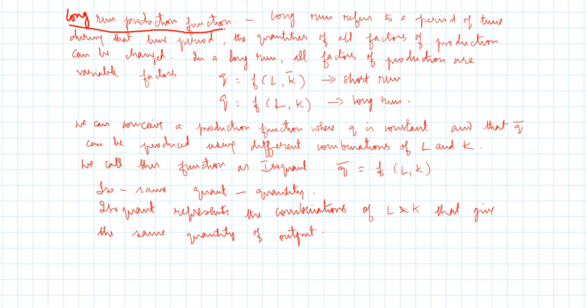We now conceive a production function where Q, the output, is constant, and that constant output can be produced using different combinations of capital and labor. We call this function an isoquant. An isoquant is a production function where Q is constant whereas L and K are variable. 'Iso' means same and 'quant' means quantity.